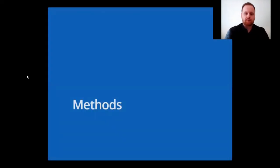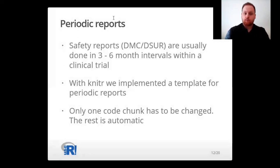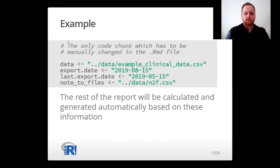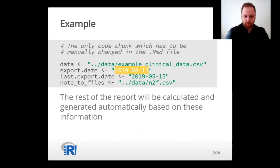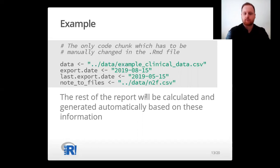Let's dive into methods, specifically periodic reports. Periodic or safety reports are usually done in three to six month intervals within a clinical trial, so you have to do them over and over again. With knitr we implemented a template for periodic reports so that only one code chunk has to be changed and the rest is done automatically. Here's an example of how this might look — this is the code chunk you have to change, for example the path where the data can be found and the date of the last export. If you change that manually and then knit the report, knitr will do the rest automatically, which of course saves a lot of time.